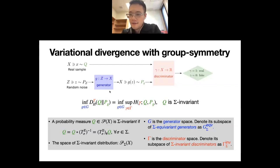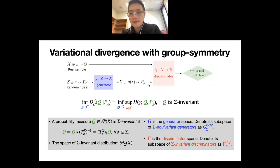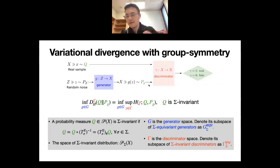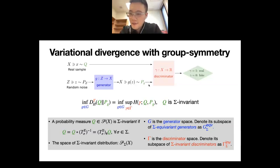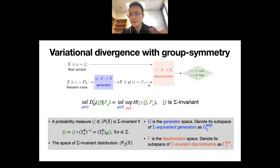It makes sense to generate only sigma-invariant distributions P_G, which can be achieved by choosing a sigma-invariant noise prior and using only sigma-equivariant generators. For the discriminator, since both Q and P_G are invariant under the group, it makes sense to use only sigma-invariant discriminators — ones that assign the same value to images that are related by a group transformation (e.g., rotation or reflection).